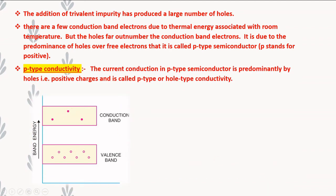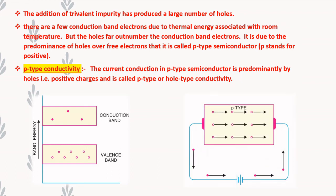Now, p-type conductivity: the current conduction in a p-type semiconductor is predominantly by holes, which carry a positive charge, and this is called p-type or hole-type conductivity. In a p-type conductor, the current conduction is mostly by holes, and thus holes carry the current.